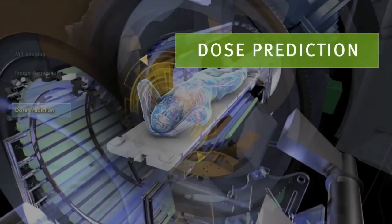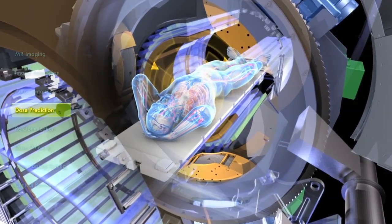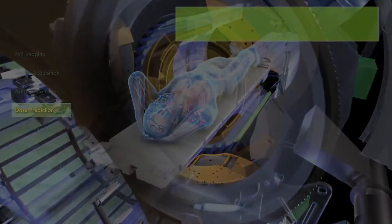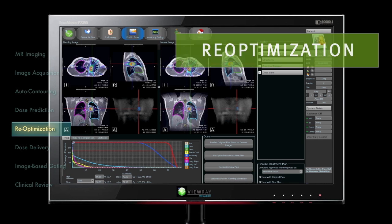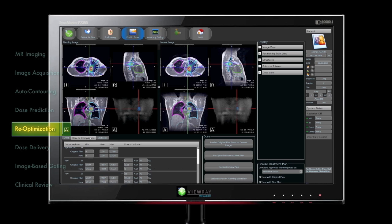On-table dose computation rapidly produces dose distributions and DVHs to predict the anticipated dose delivery. If the anticipated dose is unsatisfactory, the treatment plan is re-optimized using the most recently acquired patient positioning images.